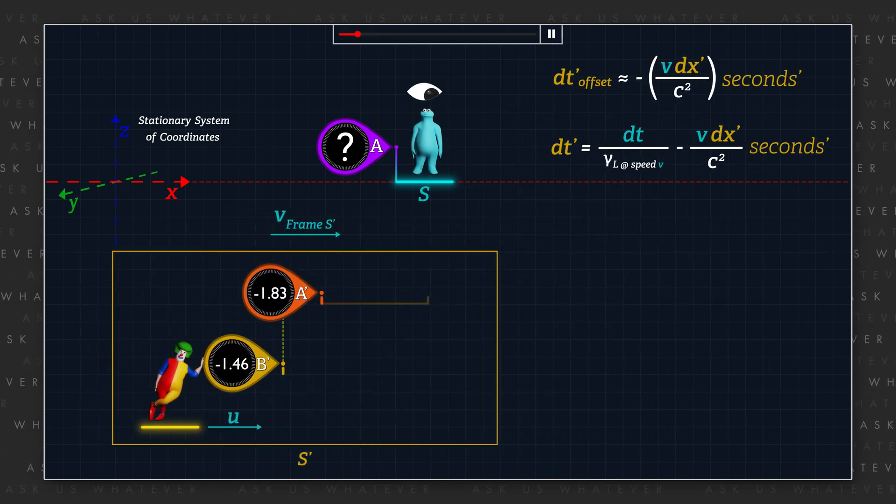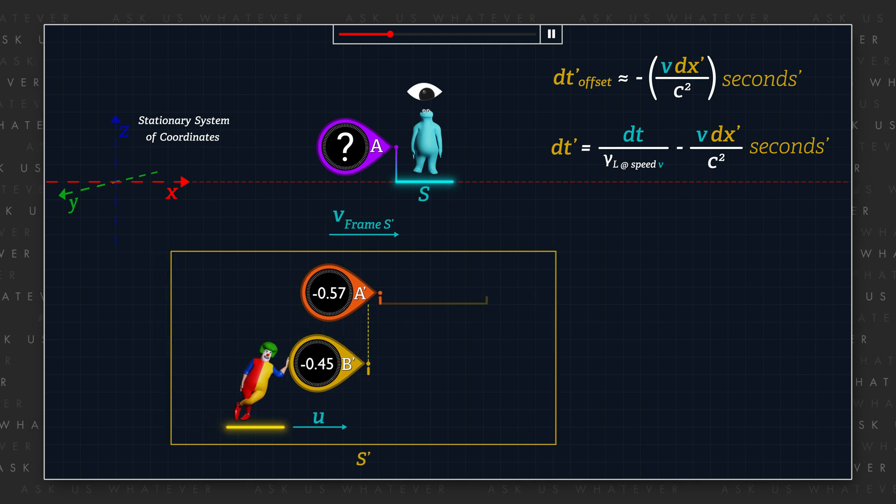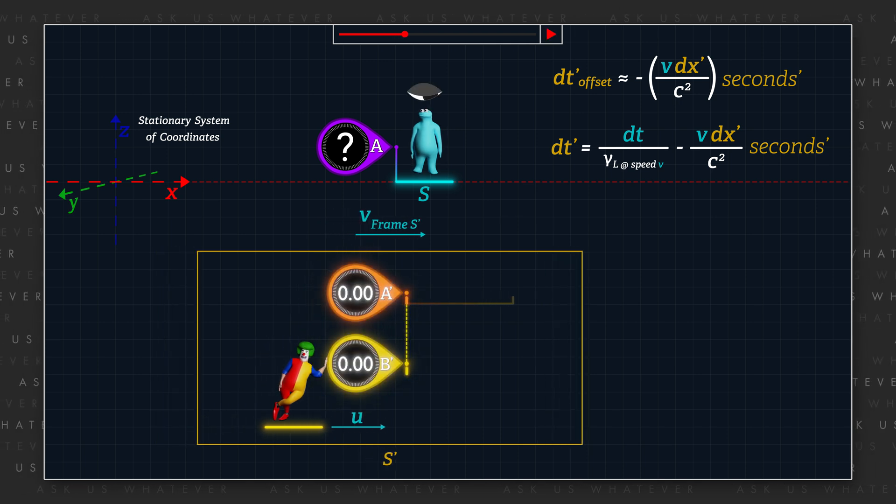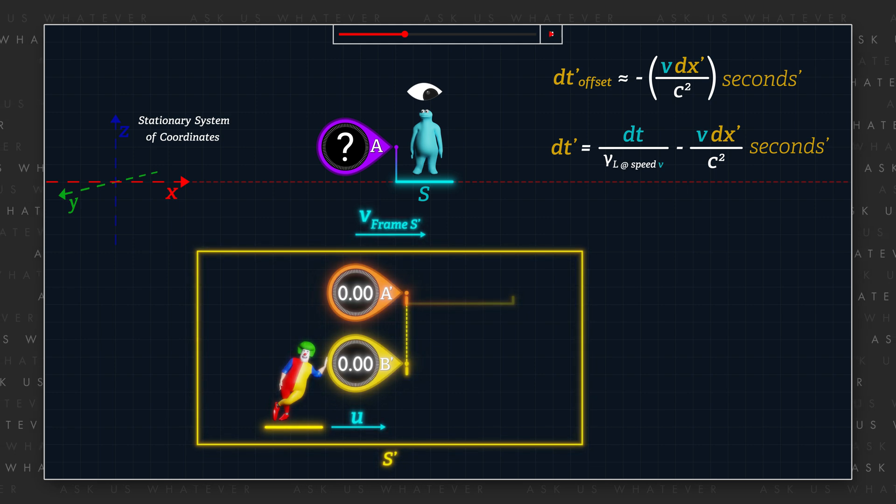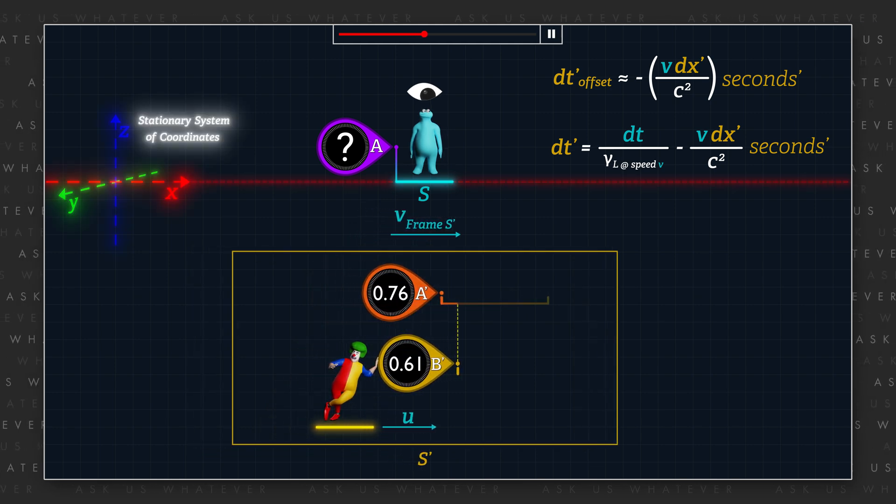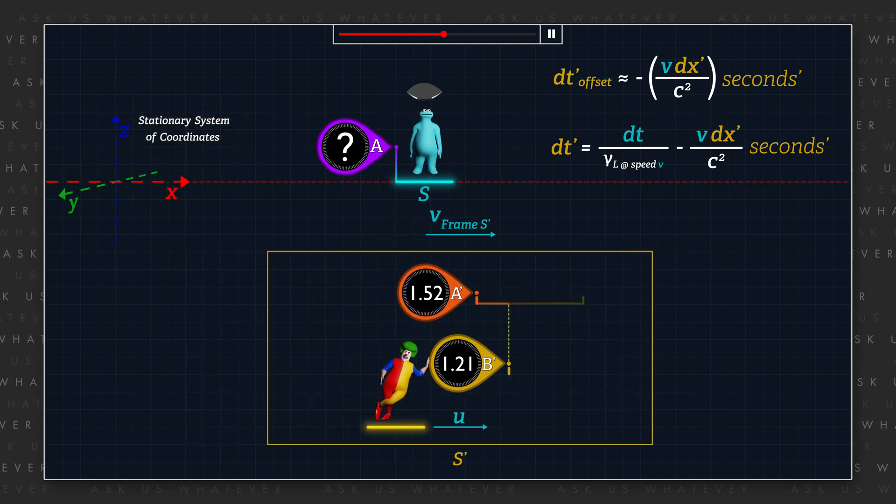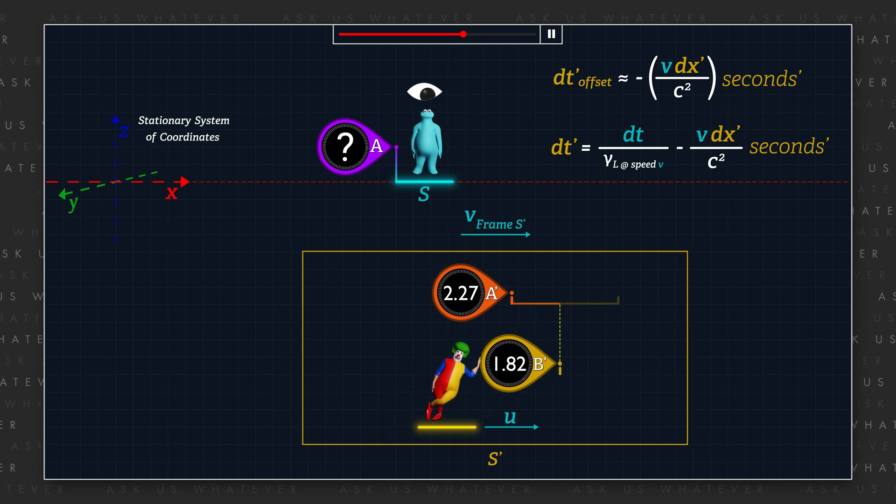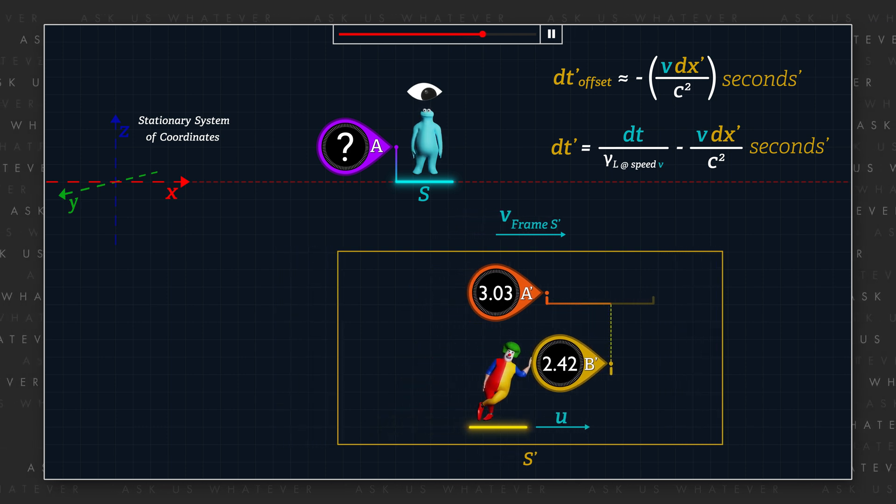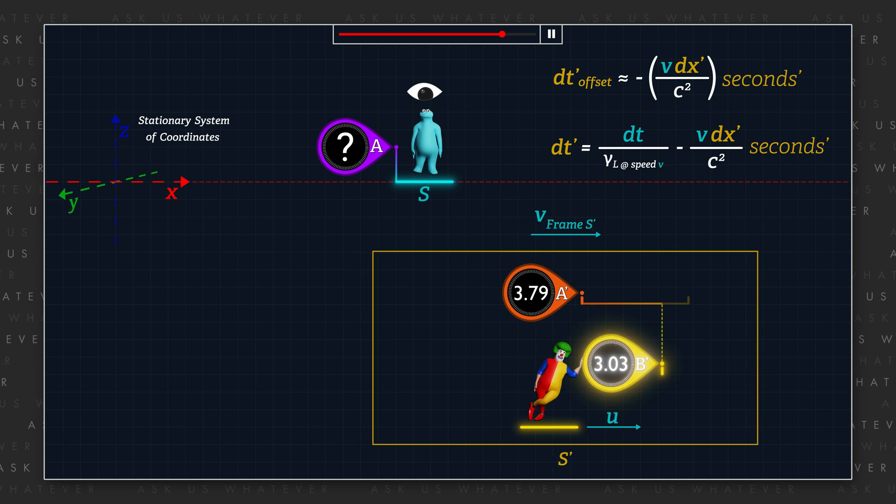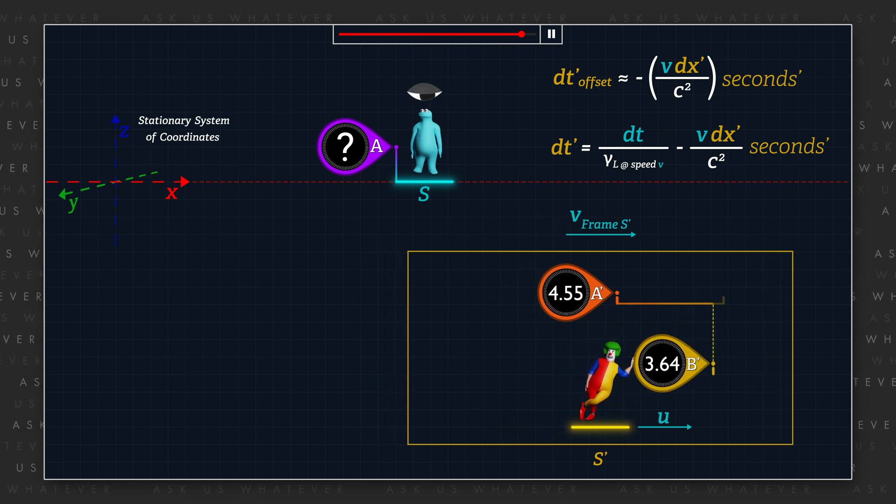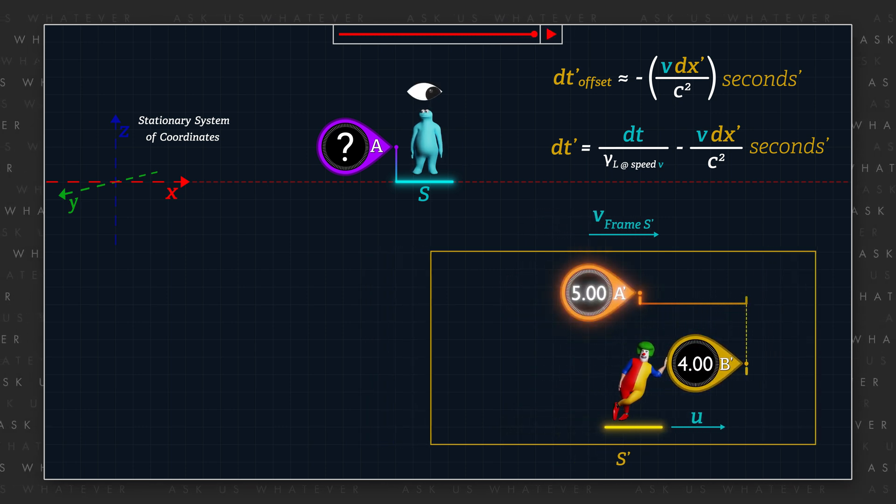Stated another way, according to special relativity, if two clocks lie adjacent to each other within an inertial reference frame S', moving slowly relative to a stationary system of coordinates, and one of the clocks is transported slowly away from the other clock, the time reading on the clock that was transported will lag behind the time reading on the clock that was not transported.